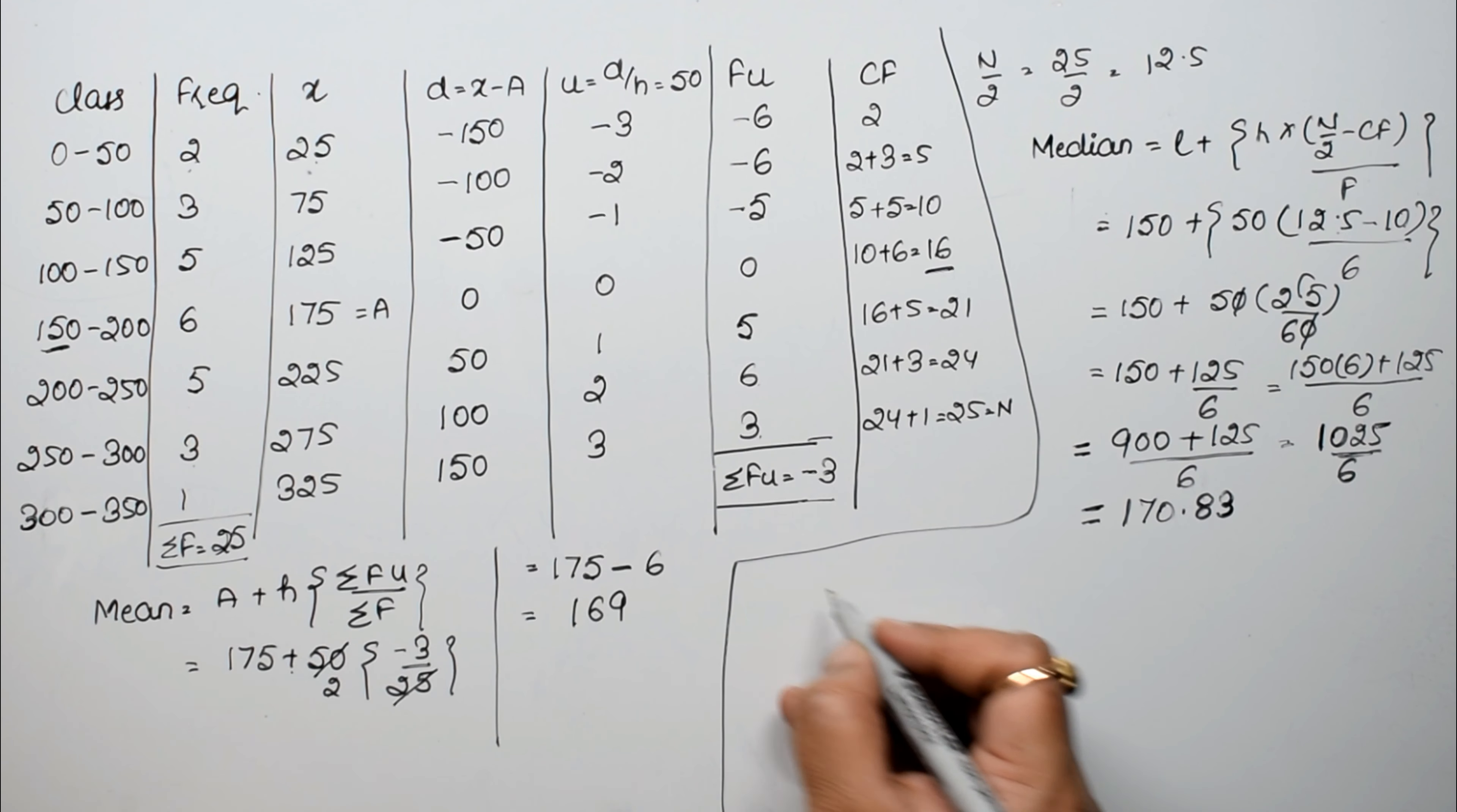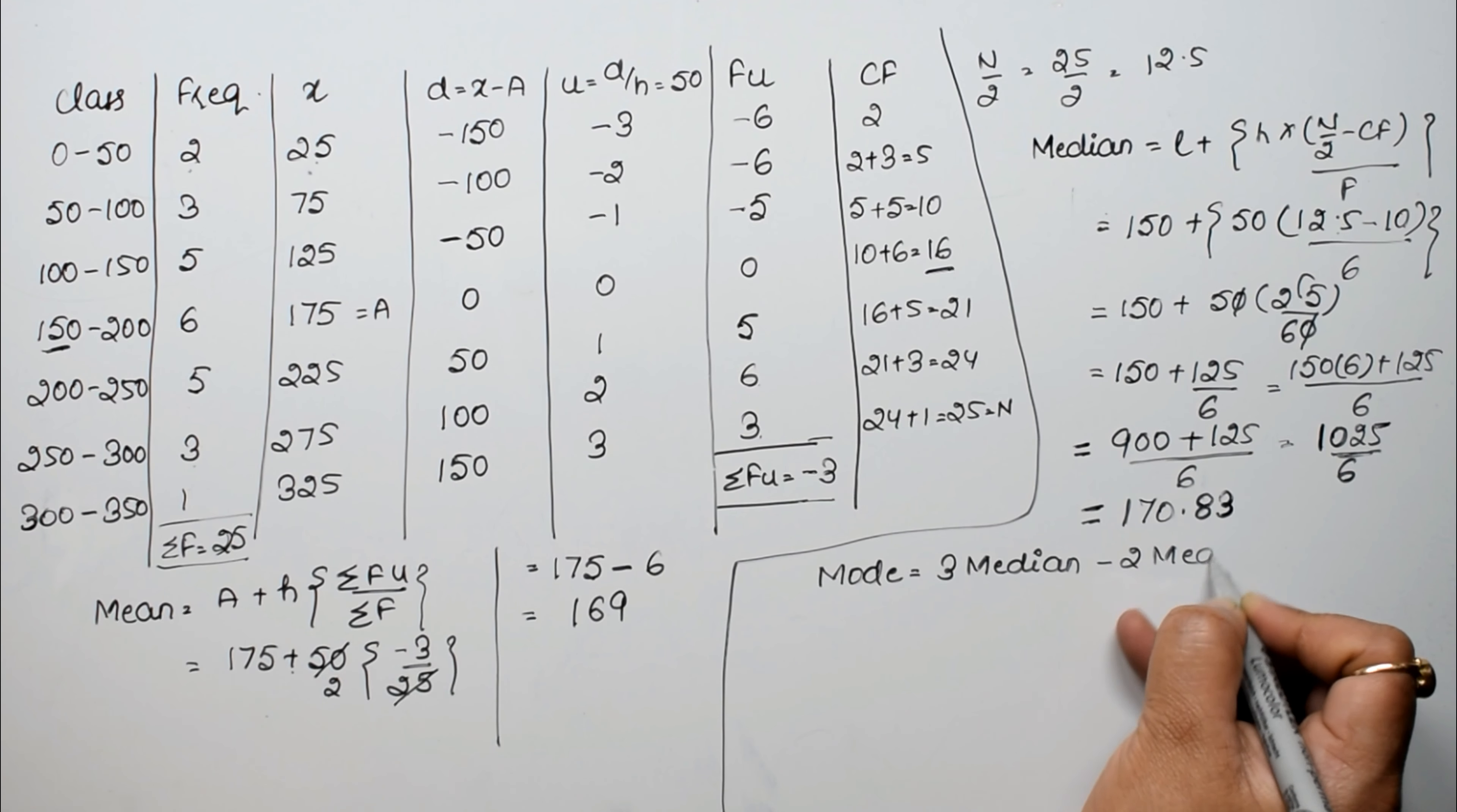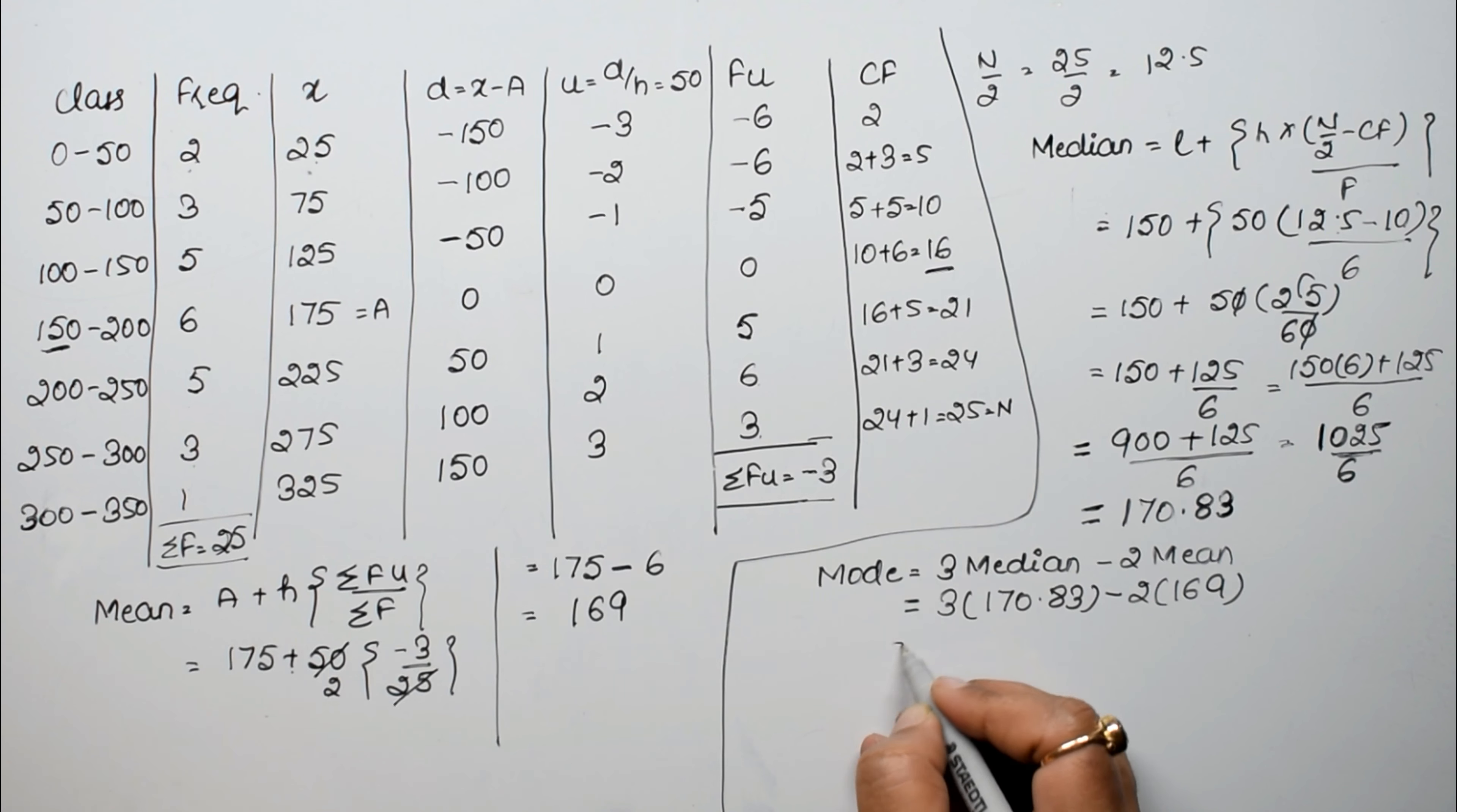Now we have to find mode. So how to find mode? Mode formula is mode equals to thrice of median minus twice of mean. So 3, median came as 170.83, and twice of mean is 169.